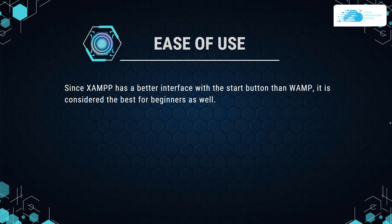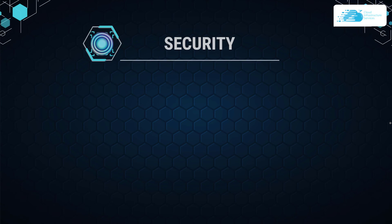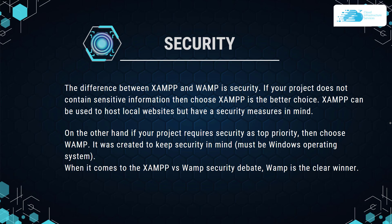While XAMPP supports both PHP and Perl, WAMP only supports PHP. For ease of use, XAMPP has a better interface with a start button compared to WAMP, making it the better option for beginners — so XAMPP takes the upper hand. Regarding security, if your project does not contain sensitive information, XAMPP is the better choice. However, if security is a top priority, choose WAMP, as it was created with security in mind. In the XAMPP versus WAMP security debate, WAMP is the clear winner.